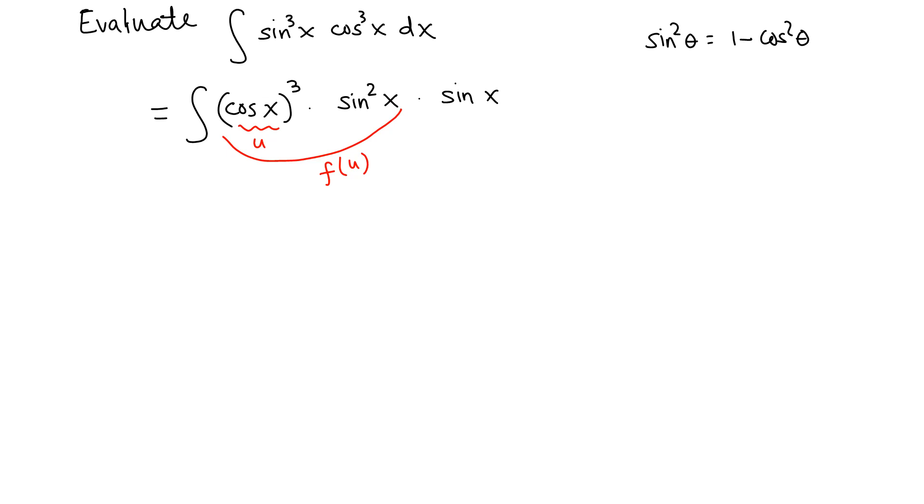We know that derivative of cosine is negative sine and we still have dx. We have to adjust for negative one, but we can do that by multiplying by negative one here to counter this negative one, and multiply by negative one here as well. So let me rewrite one more time. This is the same as cosine x cubed and sine squared x is the same as 1 minus cosine squared x. Since we know the derivative of cosine is negative sine, I'm going to write negative one times sine x dx, and to counter this negative one we can multiply by negative one as well.